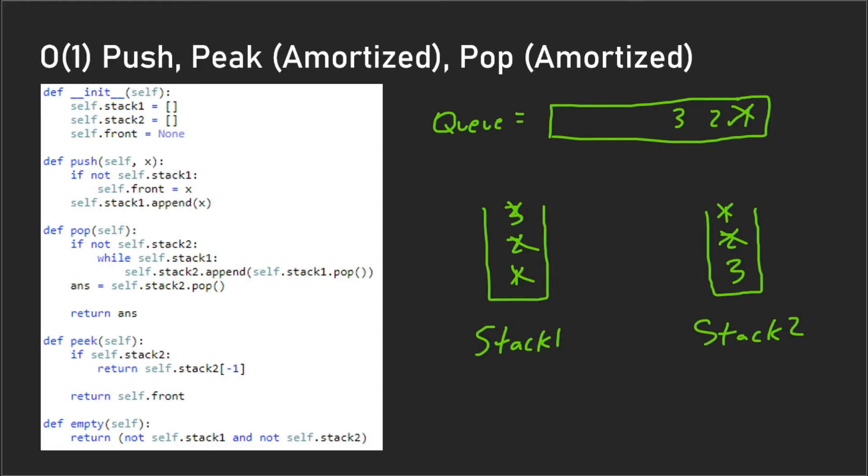And the same can be said about the peek method. We have this if statement checking to see if stack two has elements in it, and if it does you just return the top element in stack two. And one caveat here is that with this algorithm we always have to keep track of what our front element in the queue is.